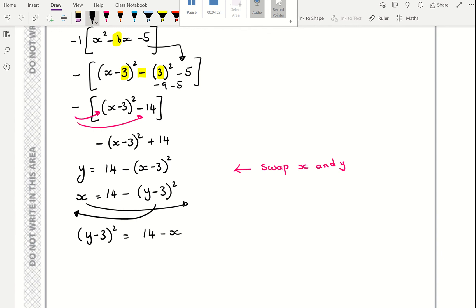I want to get rid of the square. So I'm going to square root. So y minus 3 equals plus or minus root 14 minus x. Then I'm going to add 3 to both sides. So y equals 3 plus or minus root 14 minus x.